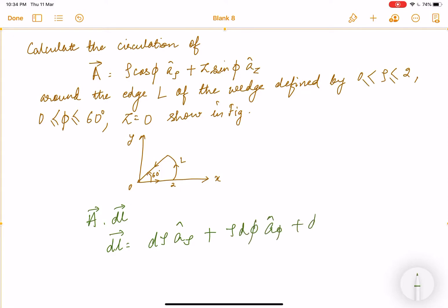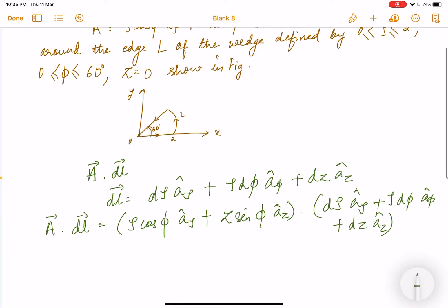plus dz a_z. So suppose I write A dot dl. What is it? I'll get (ρ cos φ a_ρ + z sin φ a_z) · (dρ a_ρ + ρ dφ a_φ + dz a_z). So basically if you multiply this, only these two terms will be left: ρ cos φ dρ plus